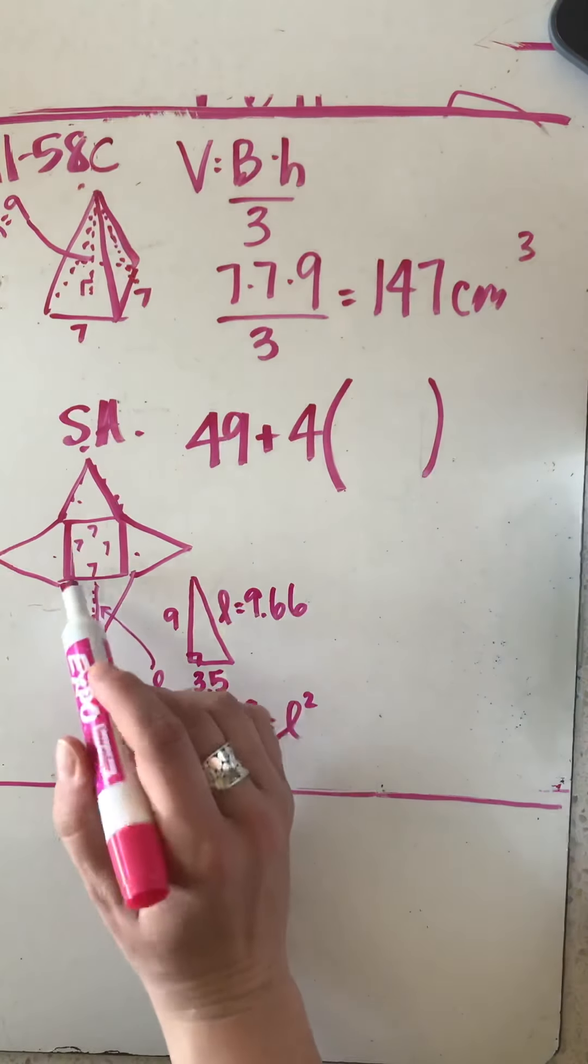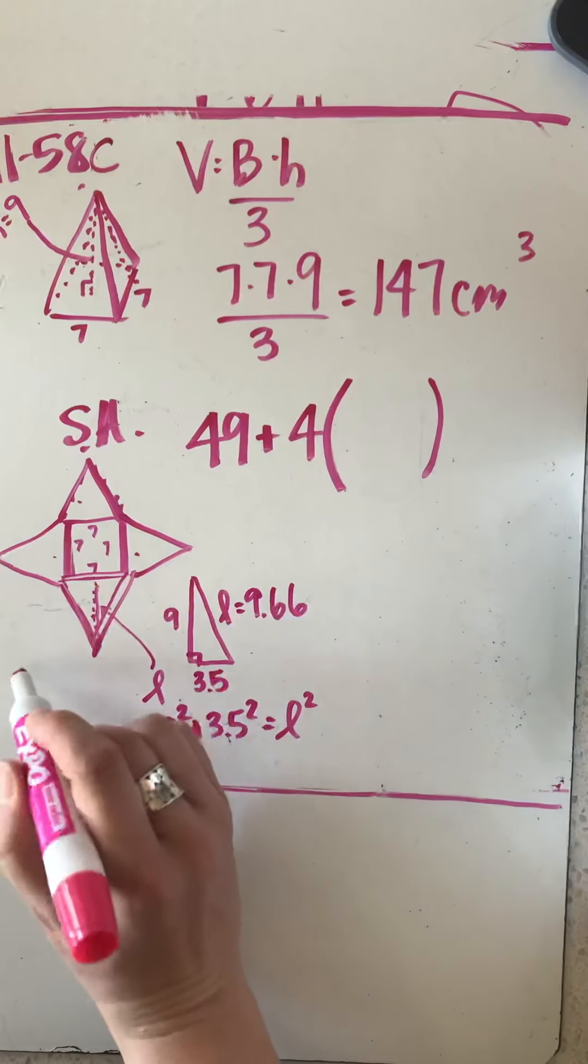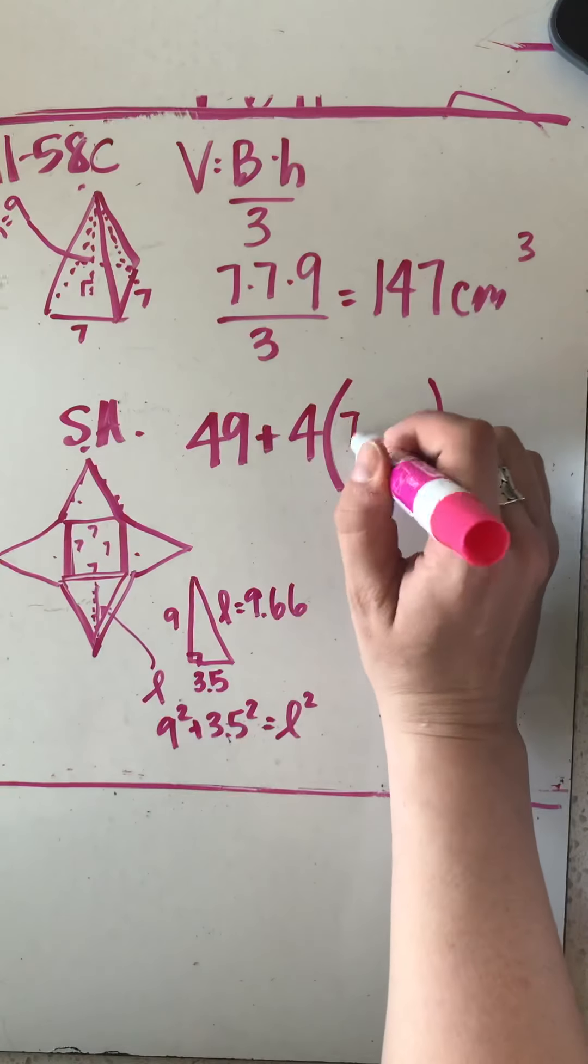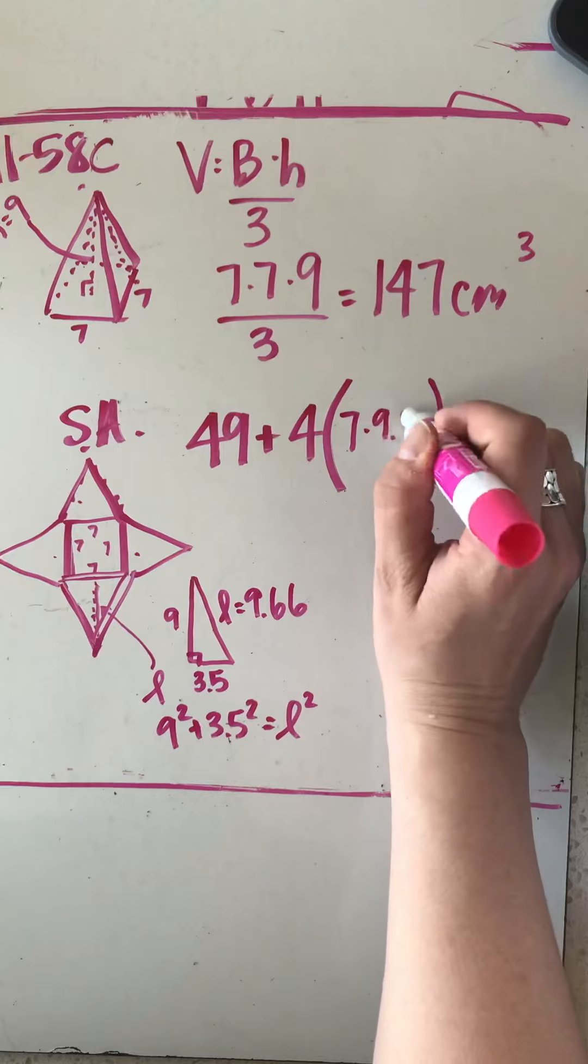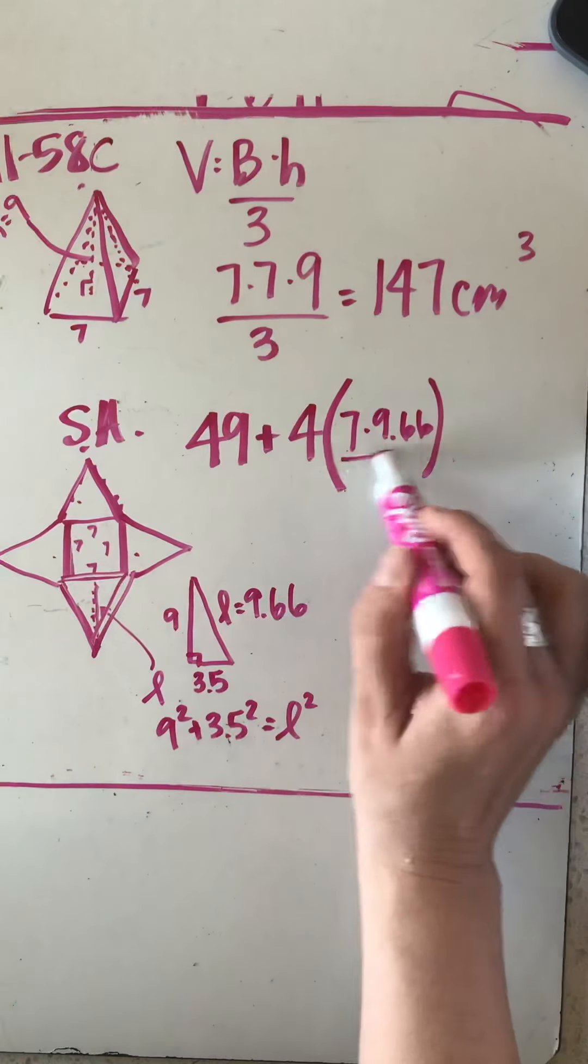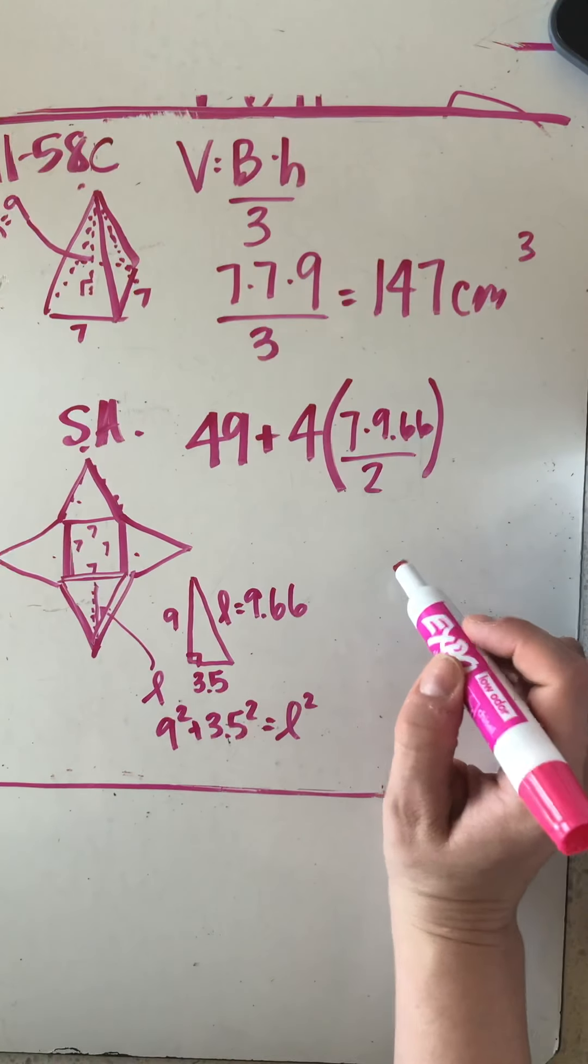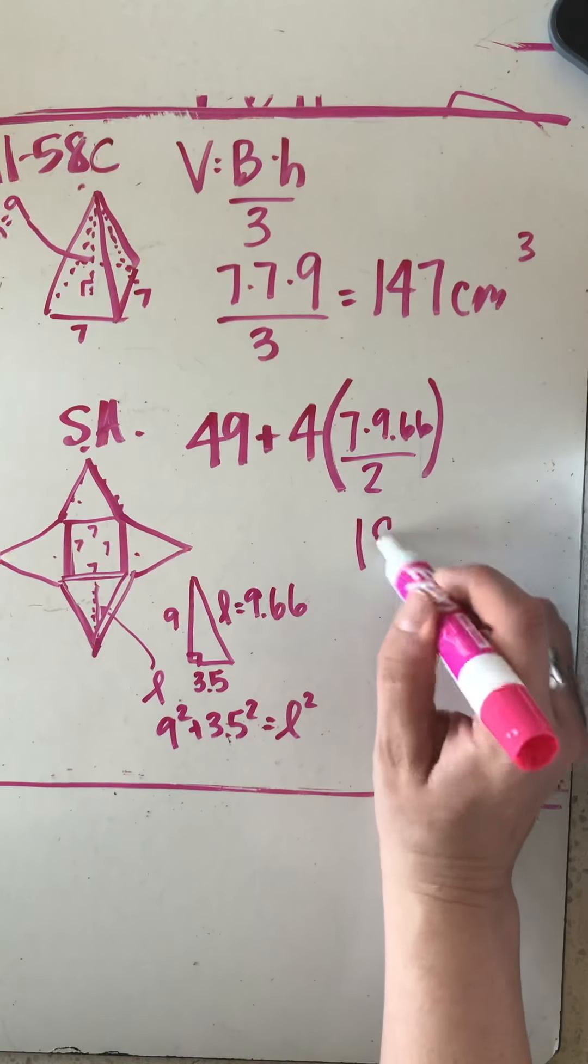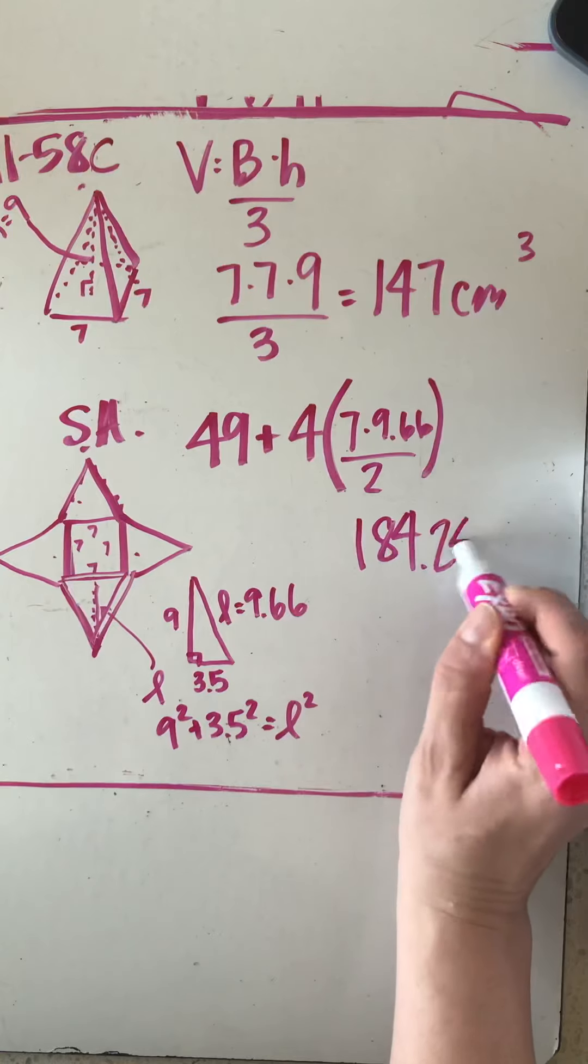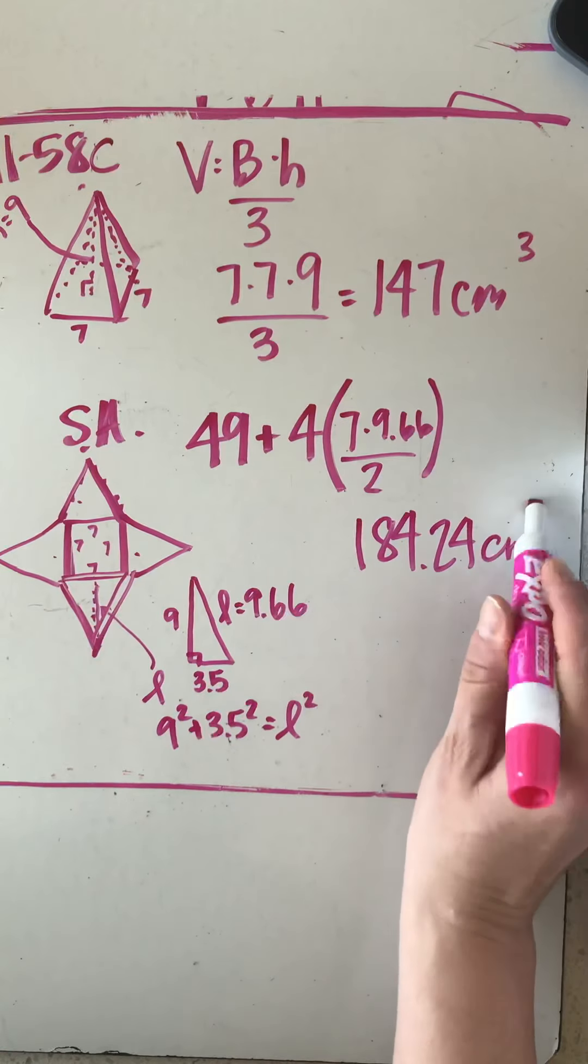So now I do have enough information to figure out the area of this triangle. The base is 7, the height is 9.66 and because it's a triangle I want to divide by 2. Plug this information into your calculator and you are going to get approximately 184.24 centimeters squared for your surface area.